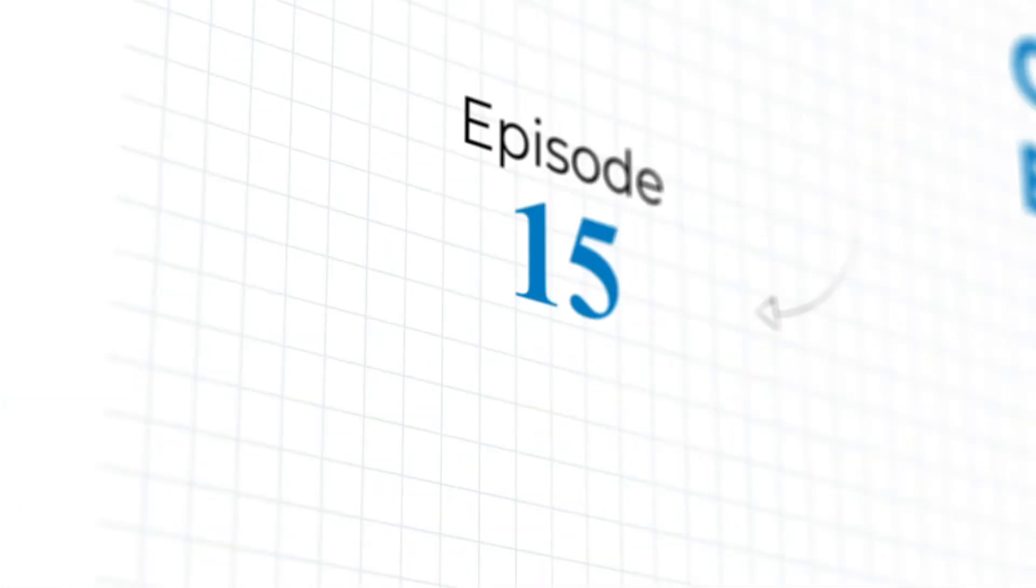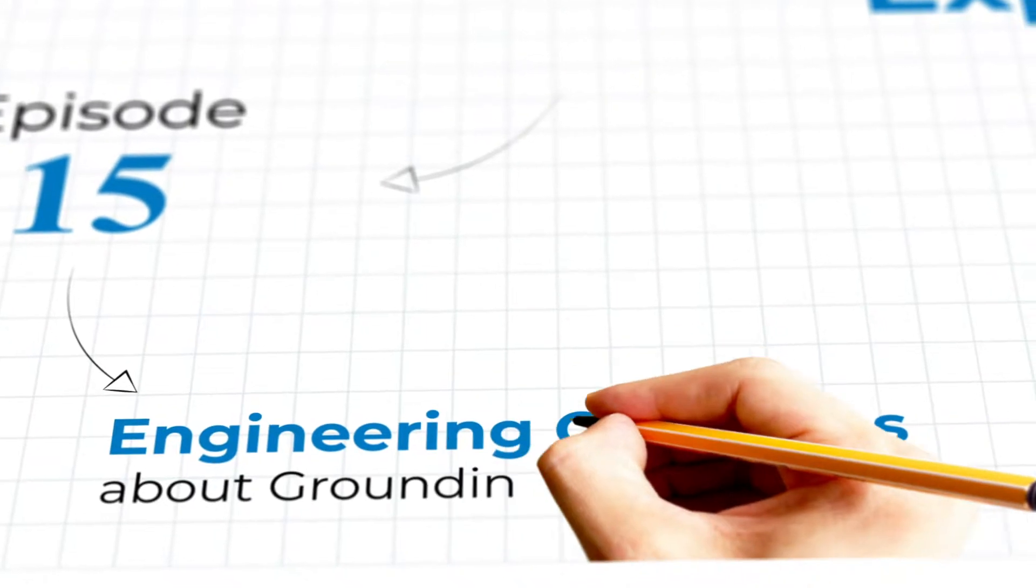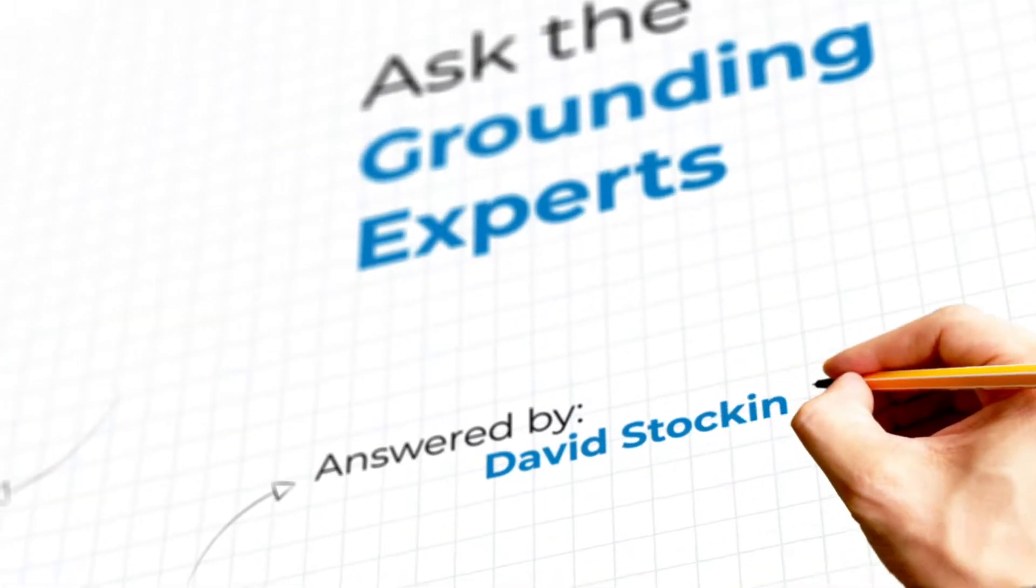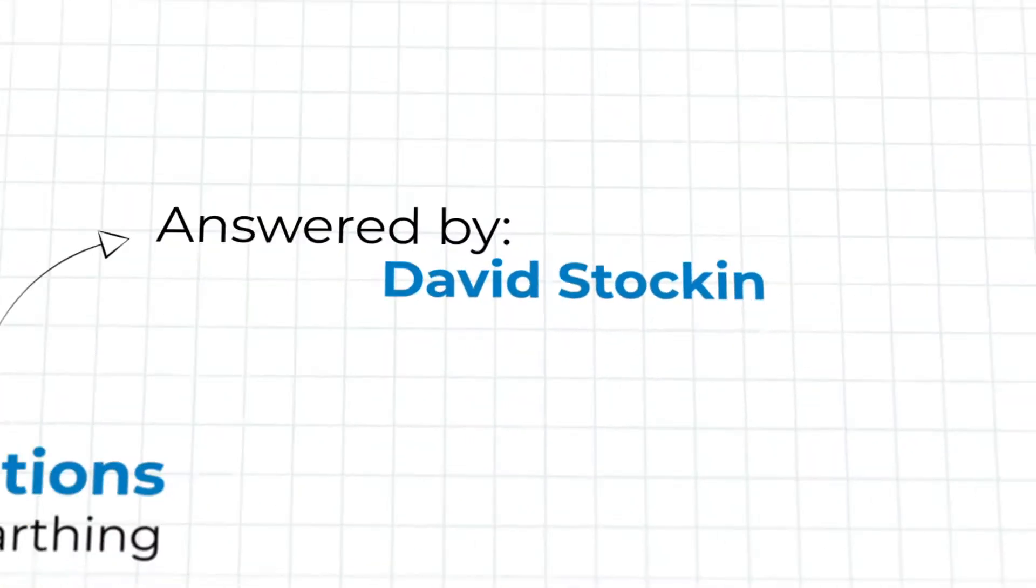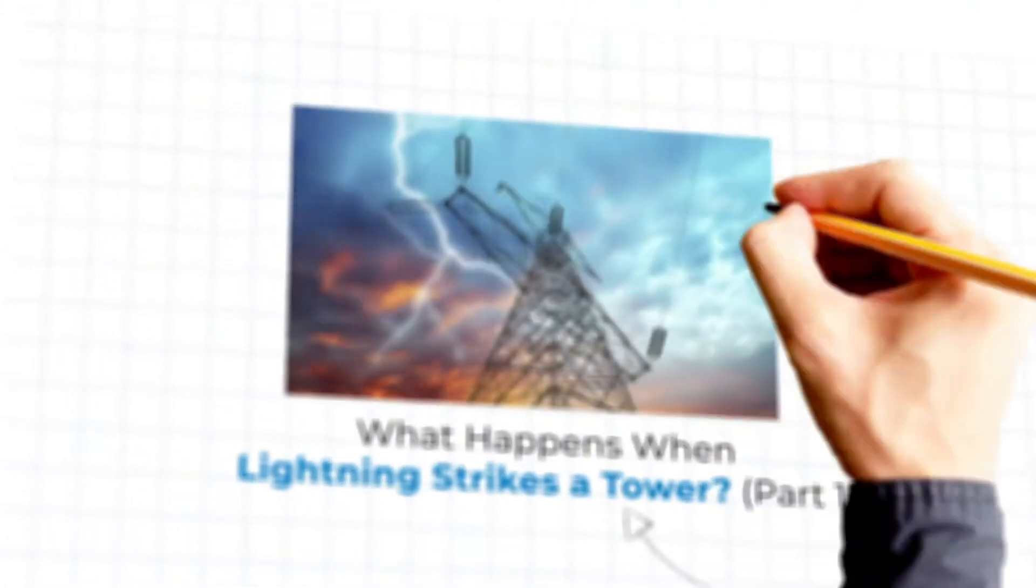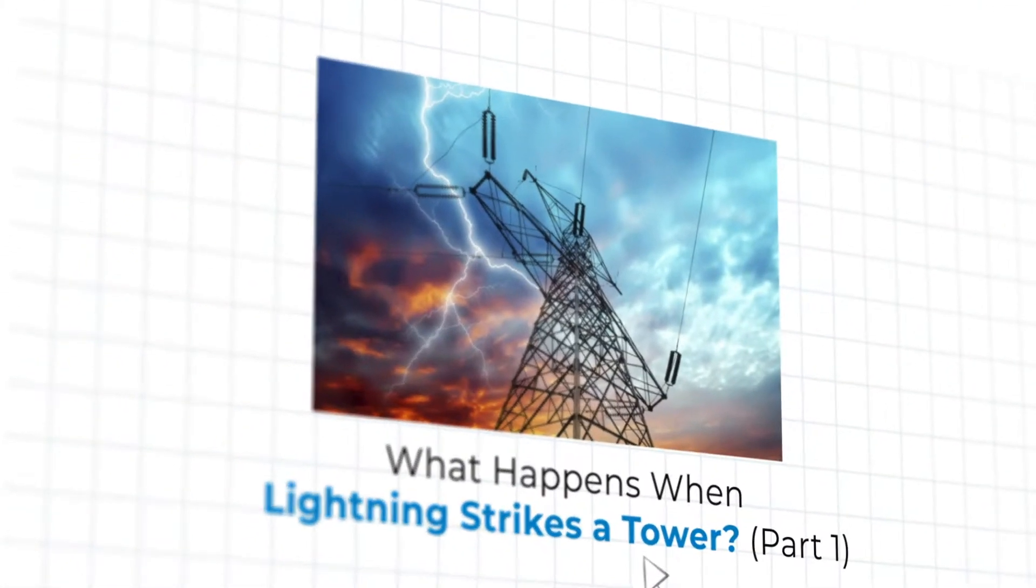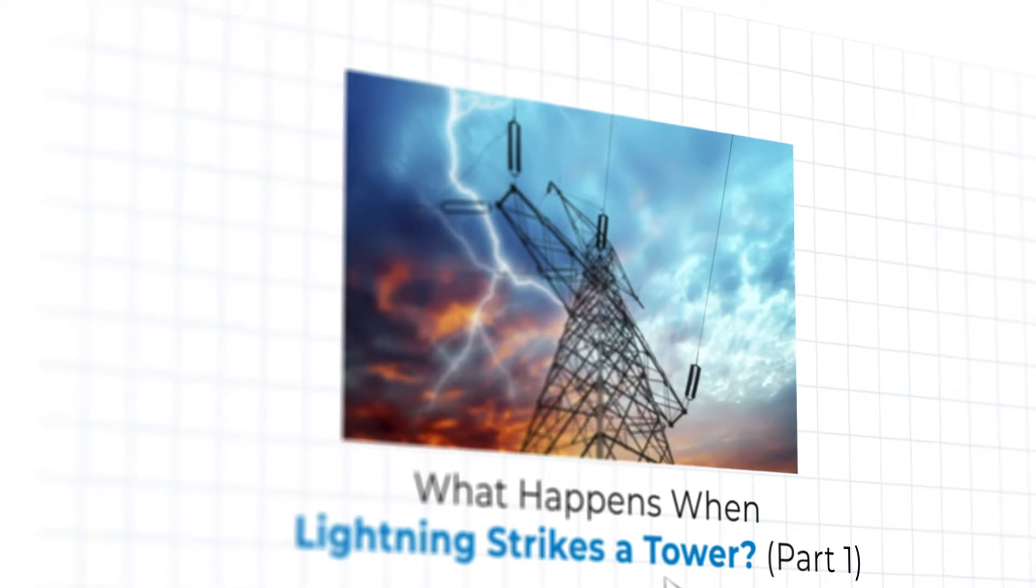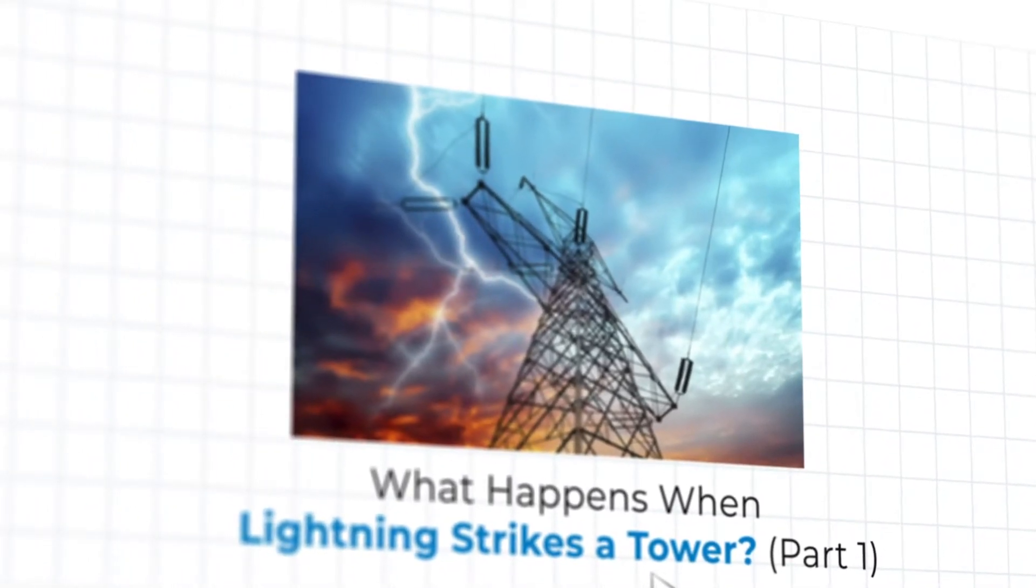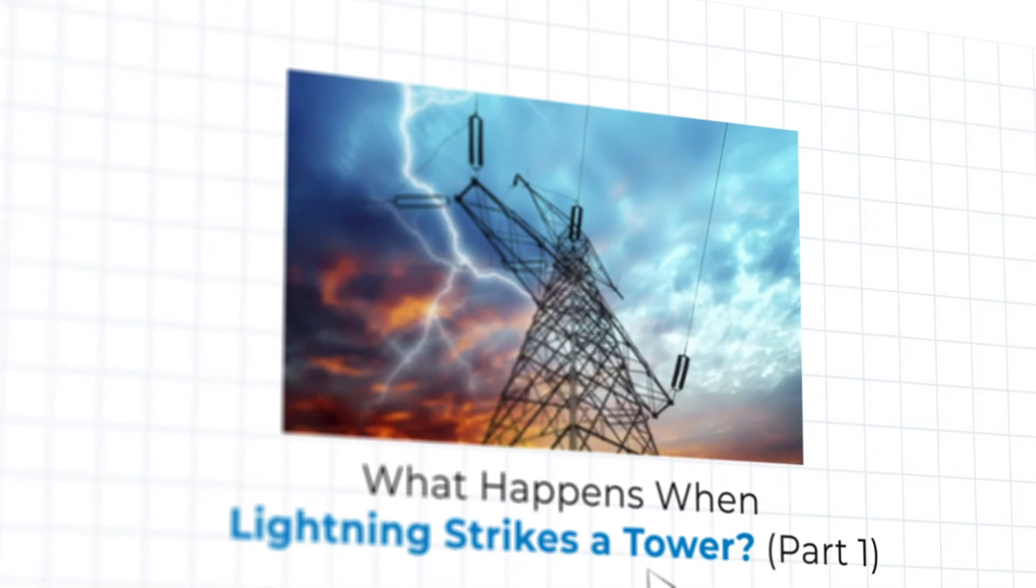Welcome to episode 15 of Ask the Grounding Experts, where our experts from ENS Grounding Solutions answer your engineering questions about the world of grounding and earthing. In today's episode, ENS President David Stocken kicks off a two-part series tackling the question, what happens when lightning strikes a tower? You may find the answer enlightening. Take it away, David.